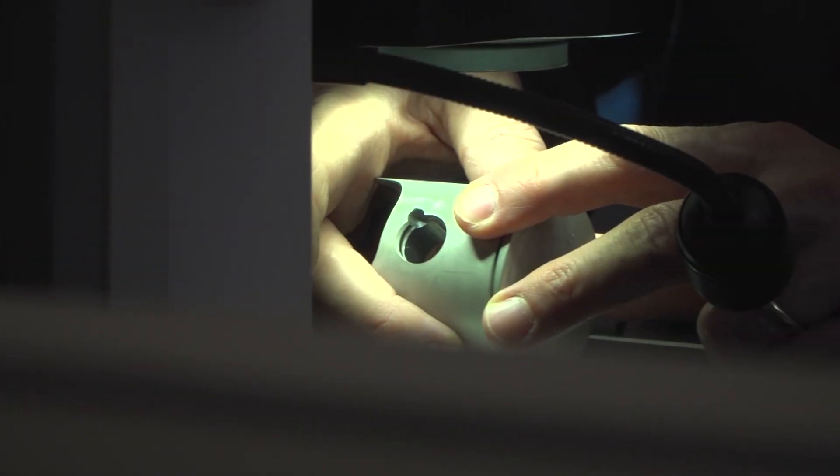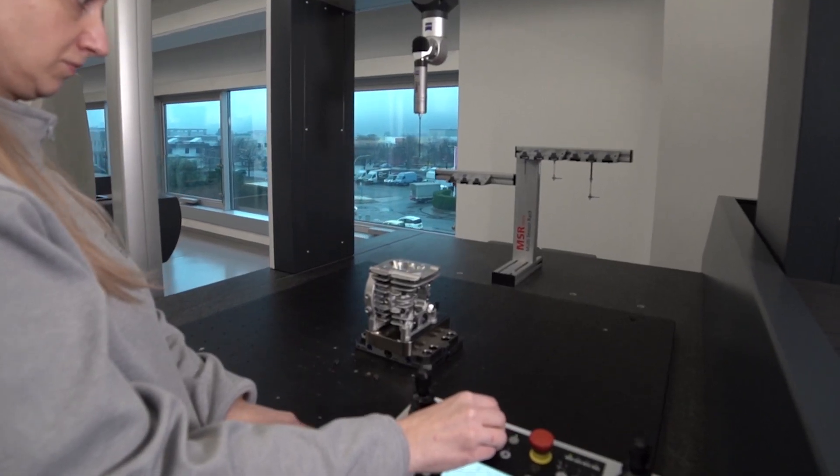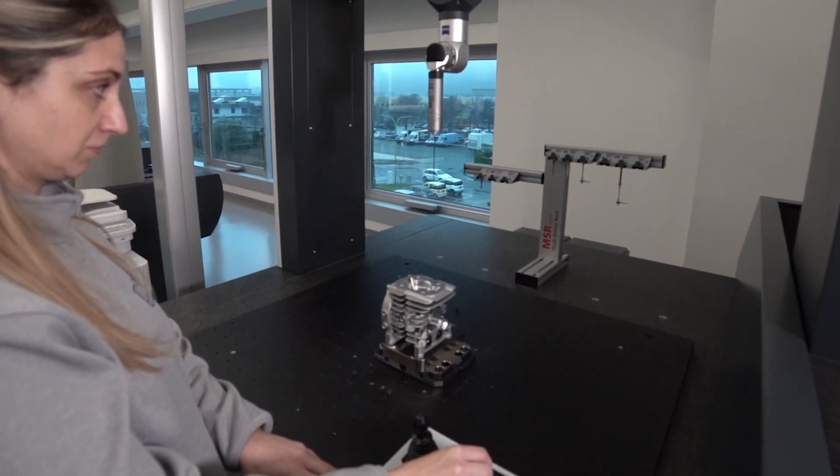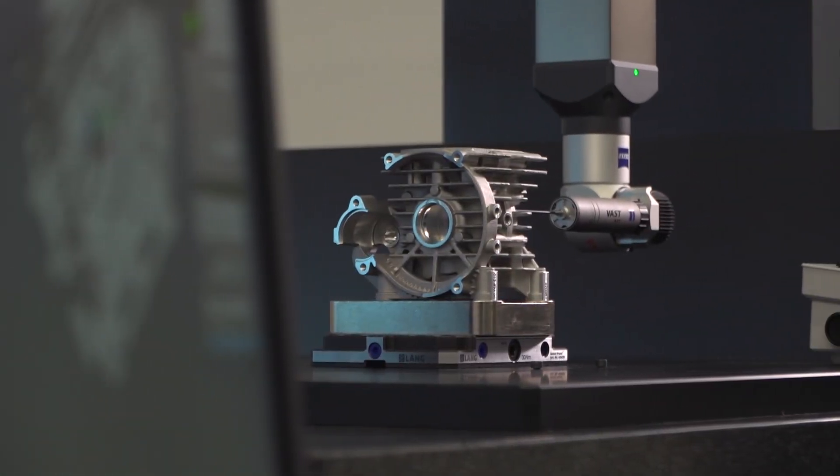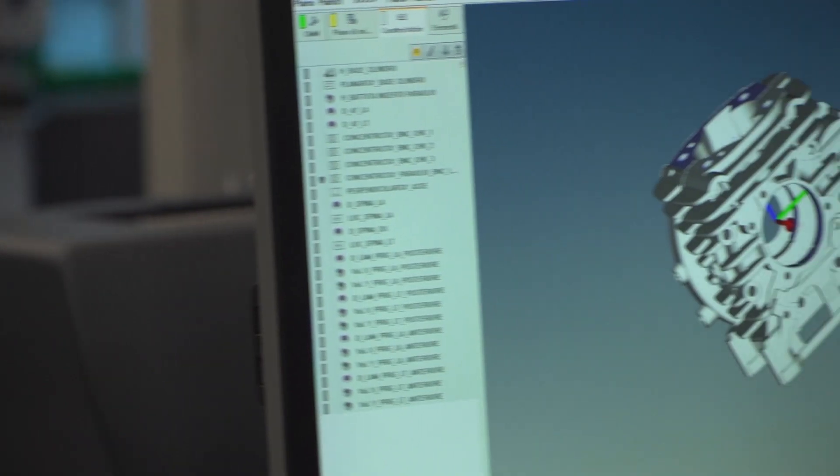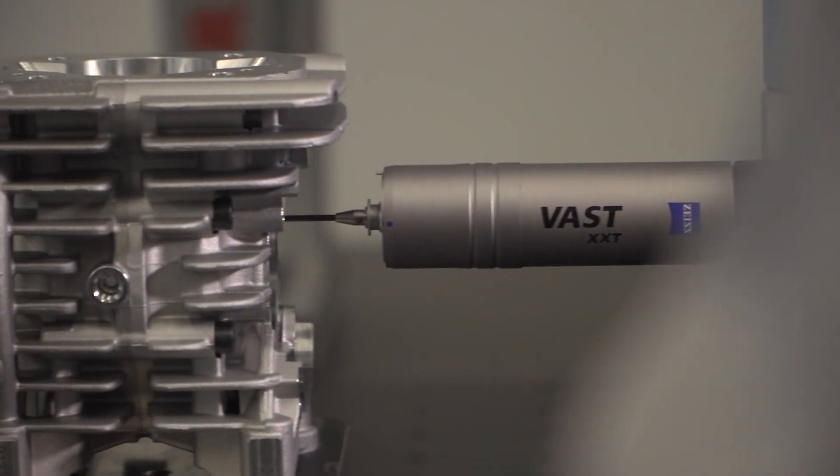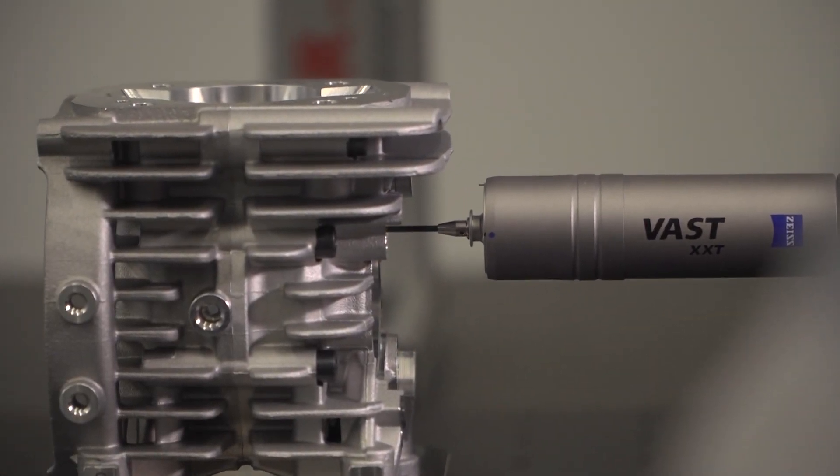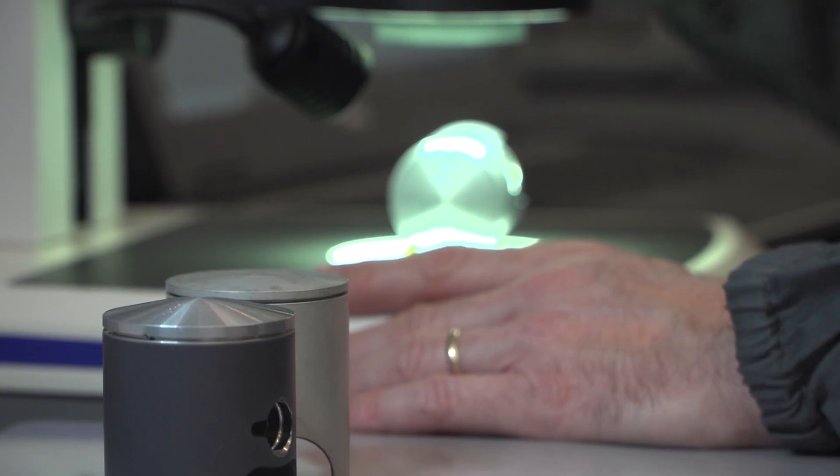Depending on the engine part produced, checks are carried out with dedicated instruments and frequency. For example, for every four crankcases machined, a full three-dimensional scan of the part is carried out to evaluate whether the measurement of every single detail is within design tolerances, which can be less than a hundredth of a millimeter.